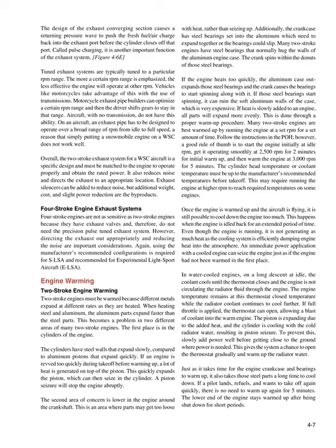The exhaust system also reduces noise and directs exhaust to an appropriate location. Exhaust silencers can be added to reduce noise, but additional weight, cost, and slight power reduction are the byproducts. Four-stroke engine exhaust systems are not as sensitive as two-stroke engines because they have exhaust valves and do not need the precision pulse-tuned exhaust system. However, directing the exhaust appropriately and reducing noise are important considerations. Using the manufacturer's recommended configurations is required for SLSA and recommended for experimental light sport aircraft (ELSA).